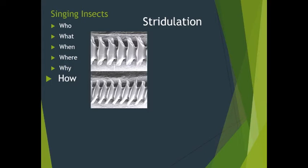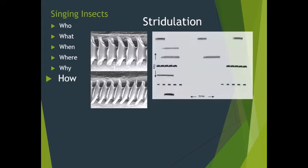Song structure is determined by how fast the wings are opened and closed — the stroke rate — and any pauses between groups of strokes. Stroke rate varies greatly between species, from once every three seconds to more than 200 times per second. In many species, stroke rate slows as temperature decreases but the overall song structure remains the same. Sonograms from seven closely related species show that each has its own pitch and pattern. In fact, the songs of two species are the only way to tell them apart, as no morphological features distinguish them.